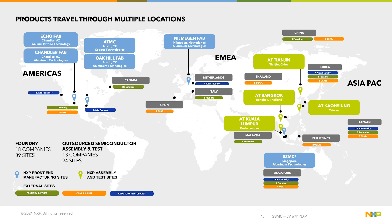We have five NXP fab sites and one joint venture site in SSMC Singapore. NXP also maintains four back-end manufacturing sites along with many OSAT sites. The reason there are so many sites is the wide range of different products NXP is offering. Unique characteristics and performance levels of a chip may require very specific processes. Within NXP alone, we have more than 100 different fab process technologies running in parallel.